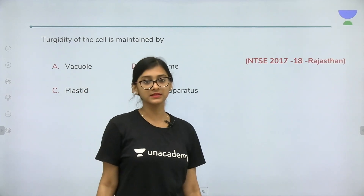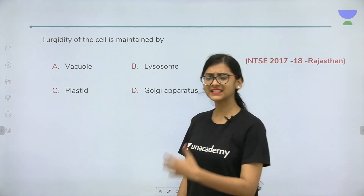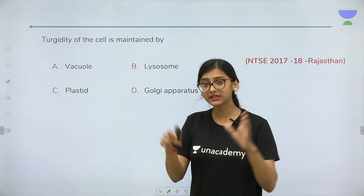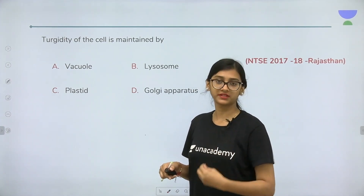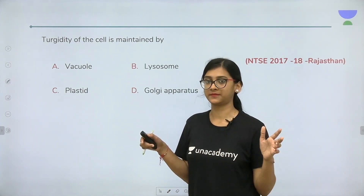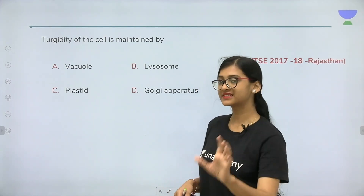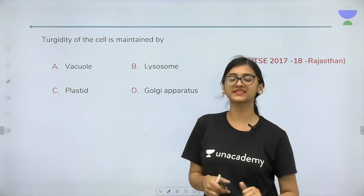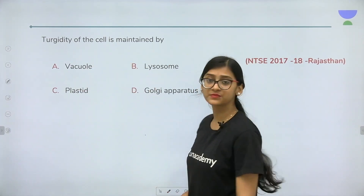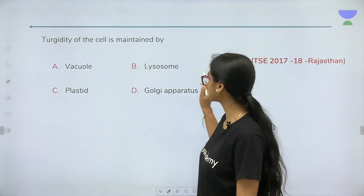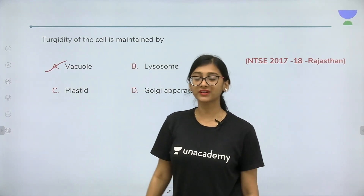The very first question: turgidity of the cell is maintained by what? Turgidity, especially in plant cells, means the cell swells when it takes up water. So turgidity is basically the swelling of the cell because of water uptake. Turgidity of the cell is maintained by the vacuole.